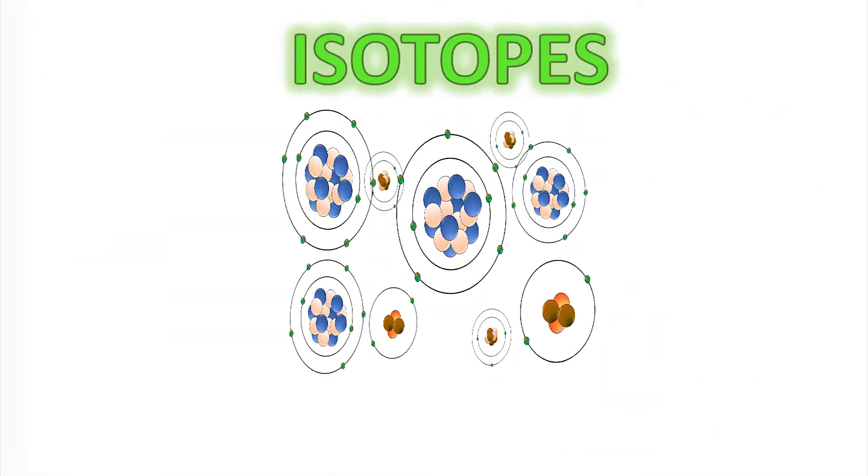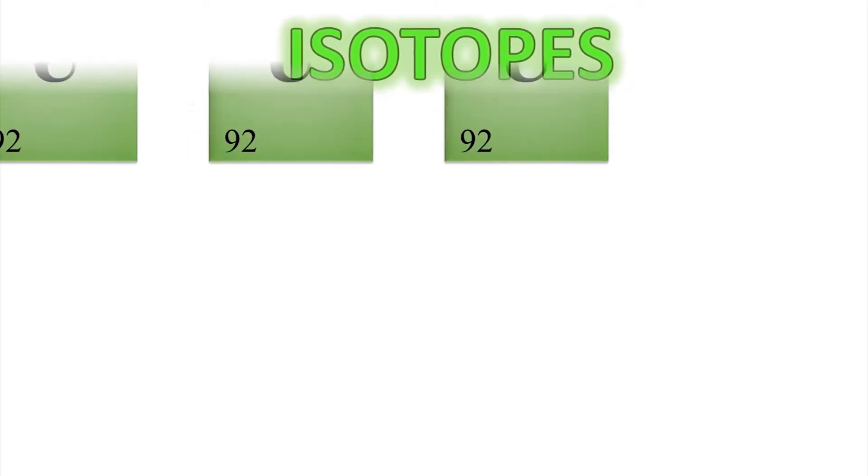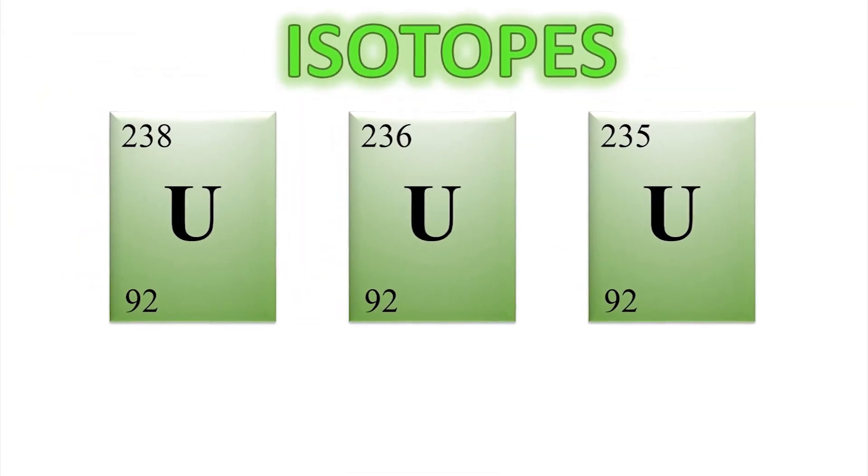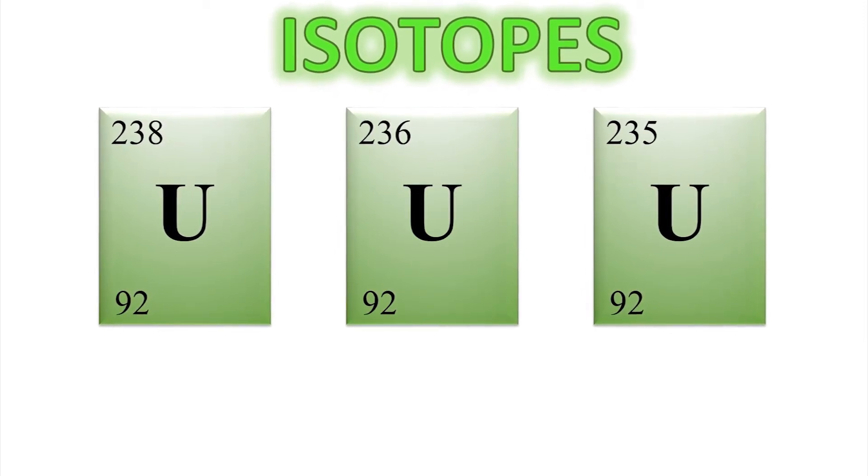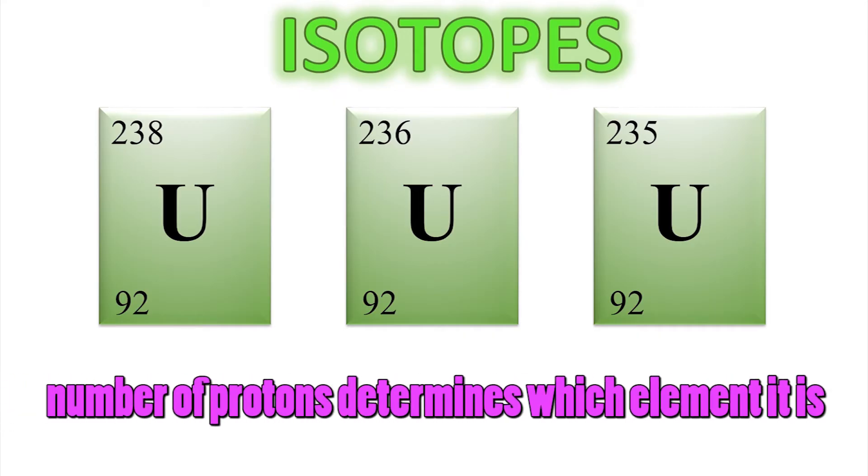Isotopes. There's a word you might have heard before. Radioactive isotopes. What does that mean? So we've been talking about elements. Those are the things we see in the periodic table, but each element can have various isotopes. For example, let's look at uranium. So it's called uranium because it has 92 protons. Anything with 92 protons, we call uranium. That's what decides what the element is.